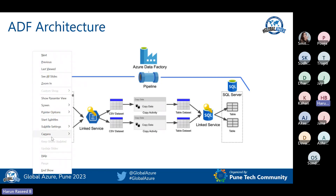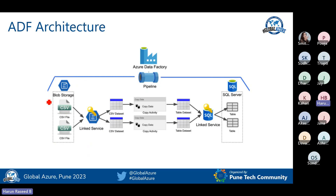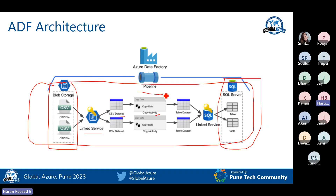In this pipeline, the input is in Blob Storage — Azure Blob Storage or Data Lake Gen2 — and we are going to move it to a SQL Server. Your client is asking you to move a CSV file from Blob Storage to SQL Server. With the help of Data Factory, you can create a pipeline and move the file from source to destination. For that, you need a linked service, integration runtime, dataset, and activity. The complete thing is called a pipeline.